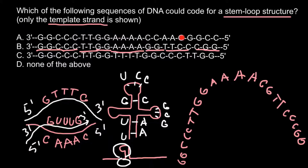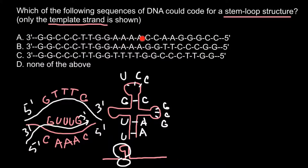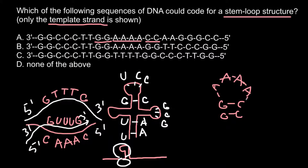Now let's check answer A. Again starting from the part we know won't make base pairing — this will be part of the loop. We have adenine, adenine, adenine, adenine — so that's our loop region. Moving outward: we have cytosine and cytosine on one side, and guanine and guanine on the other side. We know that cytosine and guanine base pair, so here we would have base pairing. This gives us our loop and the beginning of our stem.